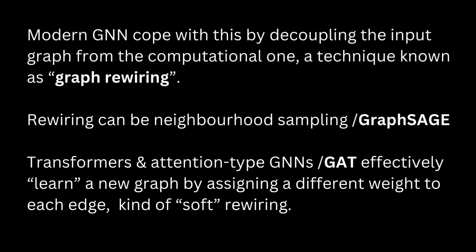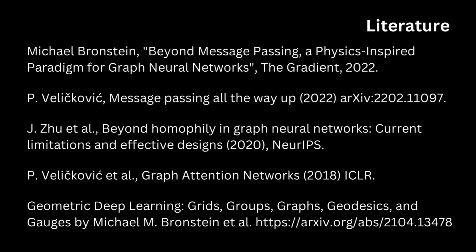And as you know, modern GNNs cope with this by decoupling the input graph from the computational graph, a technique known as graph rewiring. If you know about GraphSAGE, you know rewiring can be neighborhood sampling. Or if you go for transformer and attention-type GNNs, you effectively learn a new graph by assigning a different weight to each edge — a kind of soft rewiring — and many other methodologies.